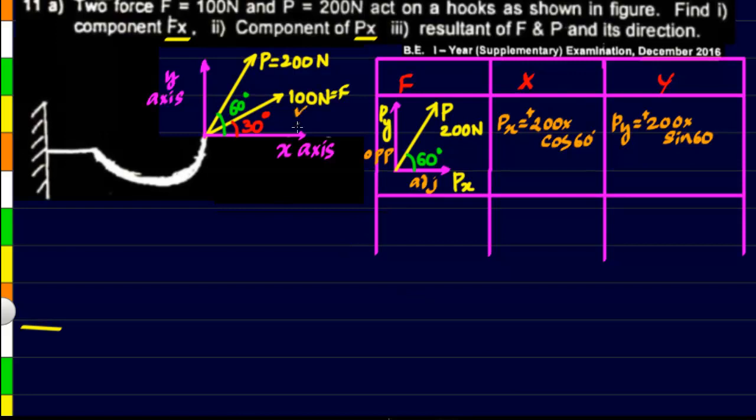Now let us solve this second force of 100 newtons, that is F. So here I have drawn the second force, that is F, in isolated form.